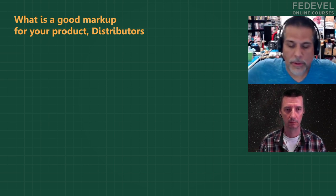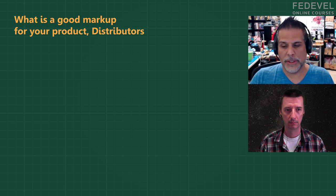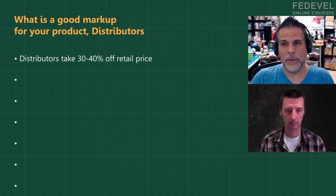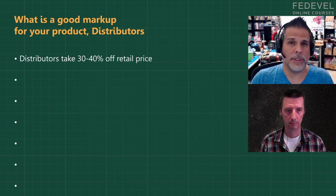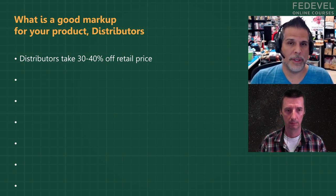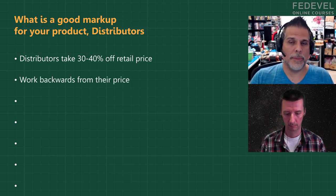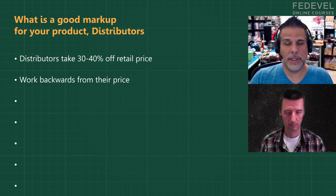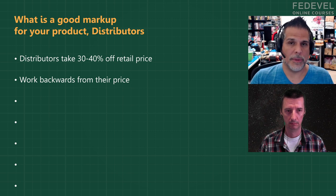The rule of thumb is this: distributors and resellers are going to want a 30 to 40% margin. Whatever the retail price is, they're going to want 30 or 40% off that price. So you kind of have to work backward from that to figure out your price to sell to them and what your manufacturing cost is so you can make some profit. That's if you go through resellers.